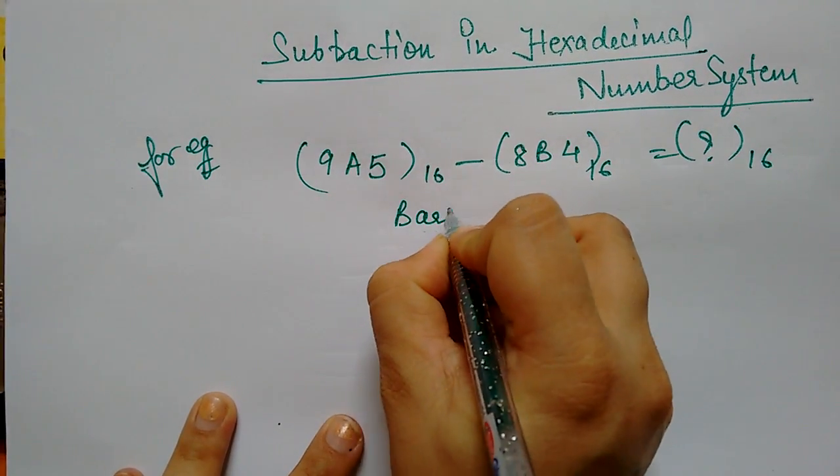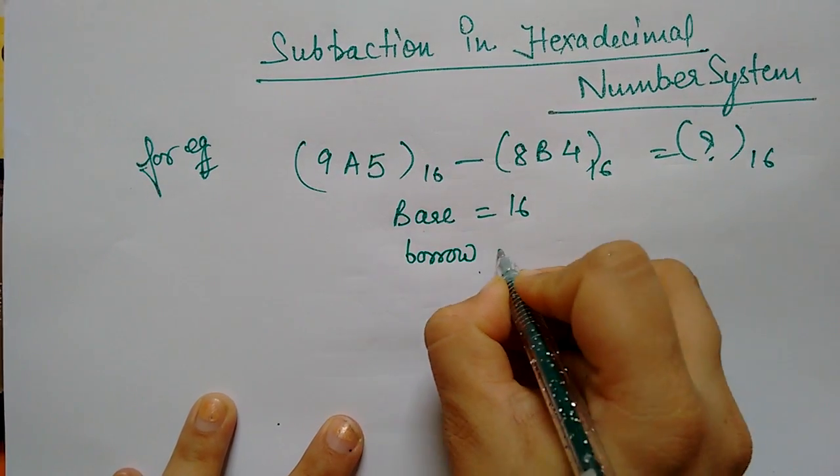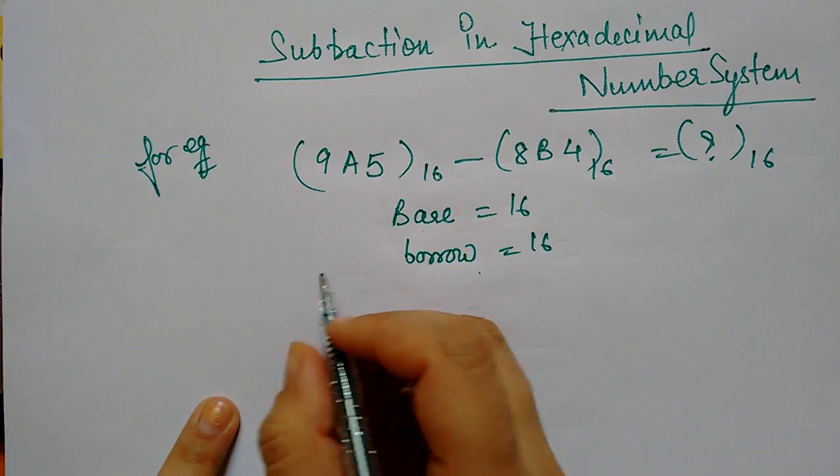So what happens in this base? Hexadecimal base is 16. So if you borrow it, then how much do we get? 16. If you borrow one digit, then 16.